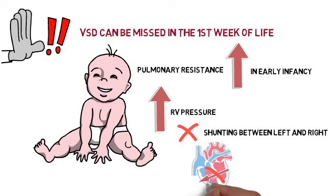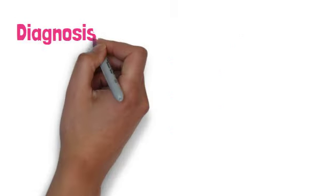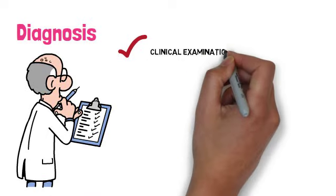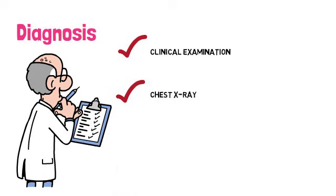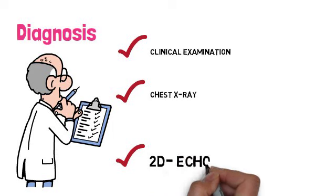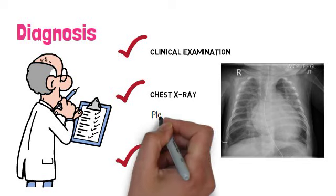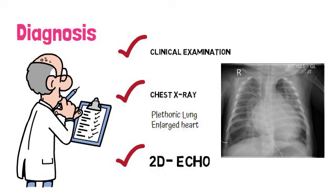Examining the child for ventricular septal defects should be repeated after a few weeks as well. Moving on to the diagnosis: in addition to clinical examination, we can use a chest X-ray to support our diagnosis, and a 2D echo will confirm the diagnosis. On the chest X-ray, you will see white lungs — also known as plethoric lungs — due to the increase in pulmonary blood flow, and an enlarged heart due to left ventricular dilation. The 2D echo is the best modality and will show the position and size of the defect.